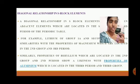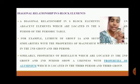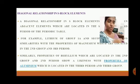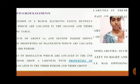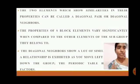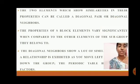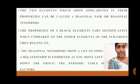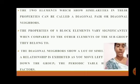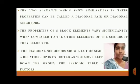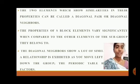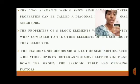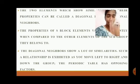Similarly, beryllium in group 2 and the second period shows likeness with aluminium in the third period. Two elements that show such similarities in properties are called a diagonal pair or diagonal neighbors. The properties of s-block elements vary significantly compared to other elements of their subgroup. The diagonal relationship shows similarity as one moves left to right and down the group, since the periodic table has opposing factors in those directions.